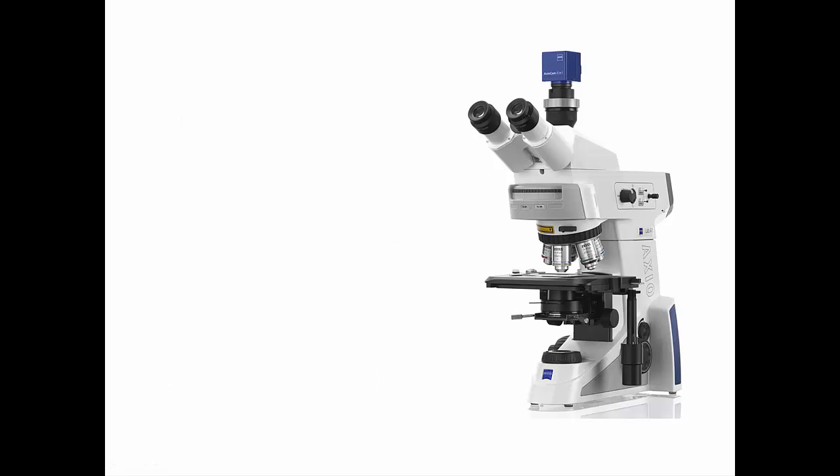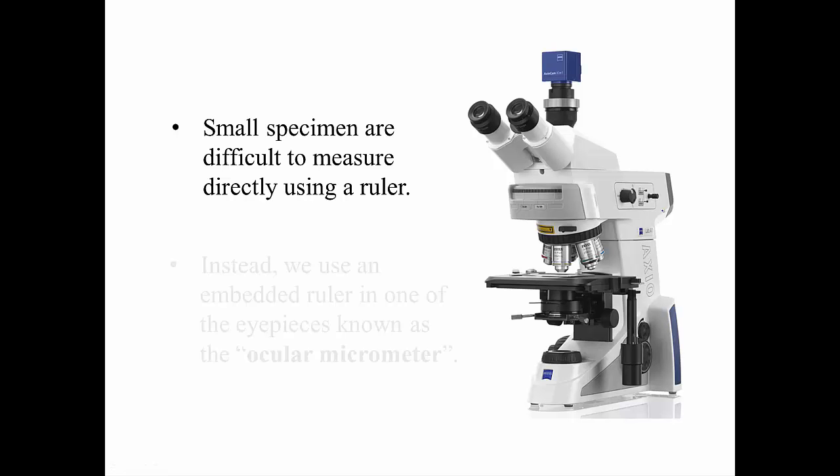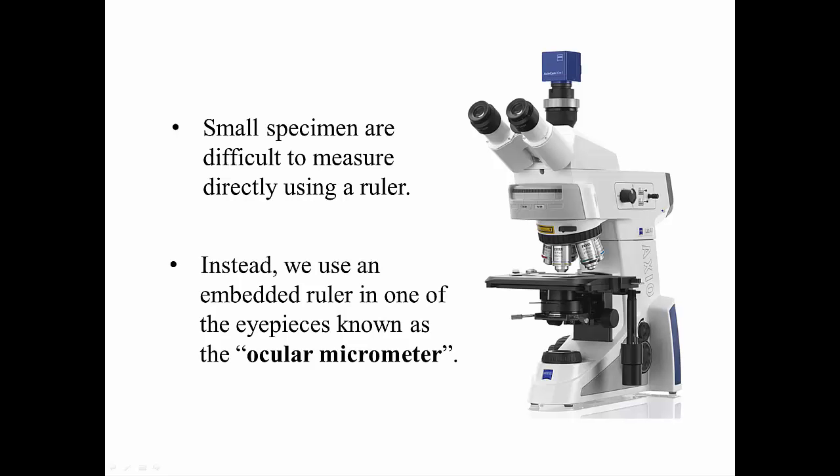If a specimen is sufficiently large, we can always measure it using an ordinary ruler. However, when working with very small specimens, it is impractical to place a microscopic ruler next to them on the stage. This is why we have to use a tool called an ocular micrometer. An ocular micrometer is basically an embedded ruler in one of the eyepieces of your microscope.